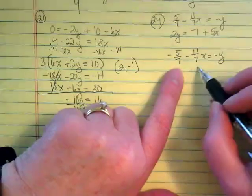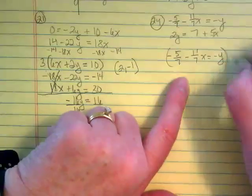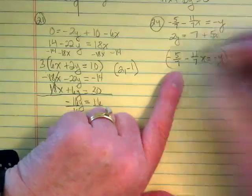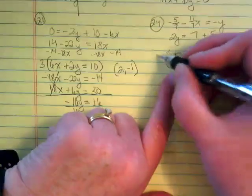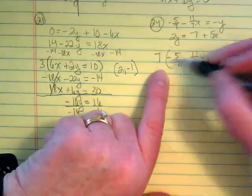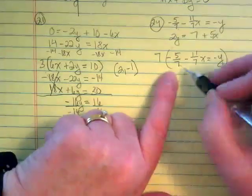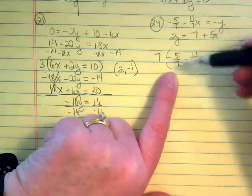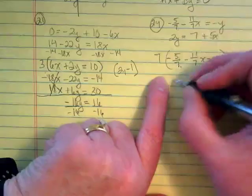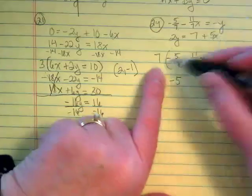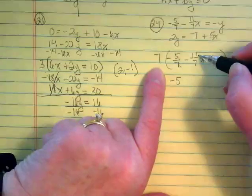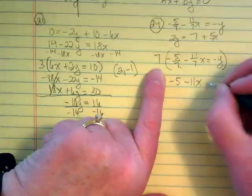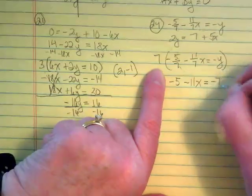Well, the first thing I want to do is get rid of the denominators. So I'm going to multiply the entire equation by the reciprocal. And since they both have a denominator of 7, I'm going to multiply everything in this by 7, and then we won't have fractions anymore. 7 times negative 5 would be negative 35. Divided by 7 gets us back to negative 5. The same would be true here. We'd get negative 77 divided by 7, which goes back to negative 11x equals negative 7y.